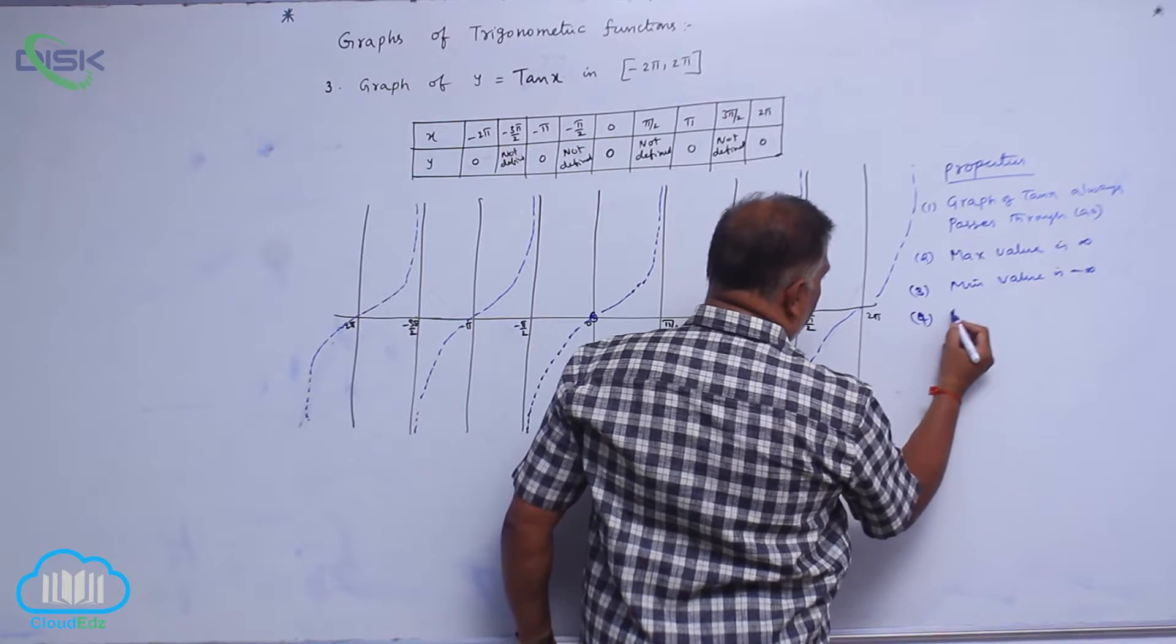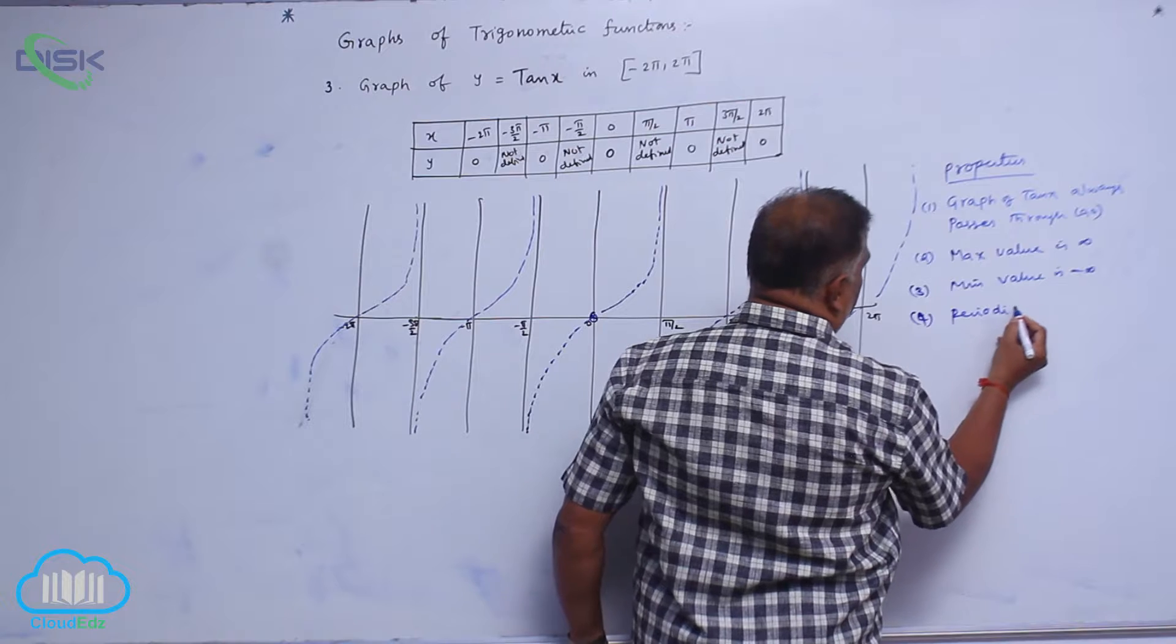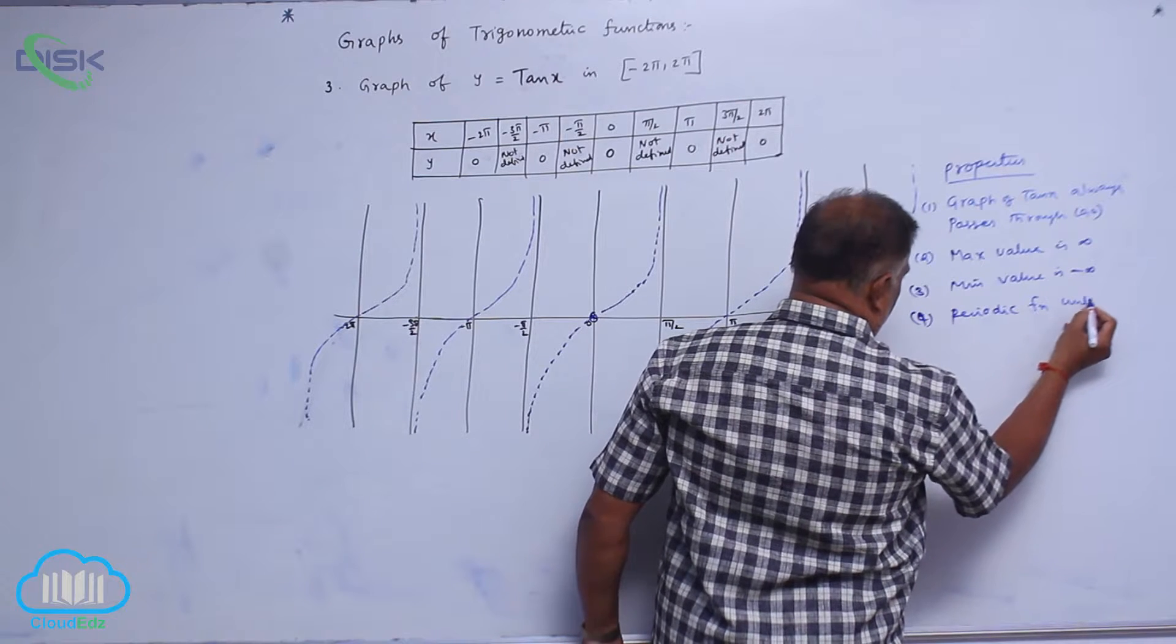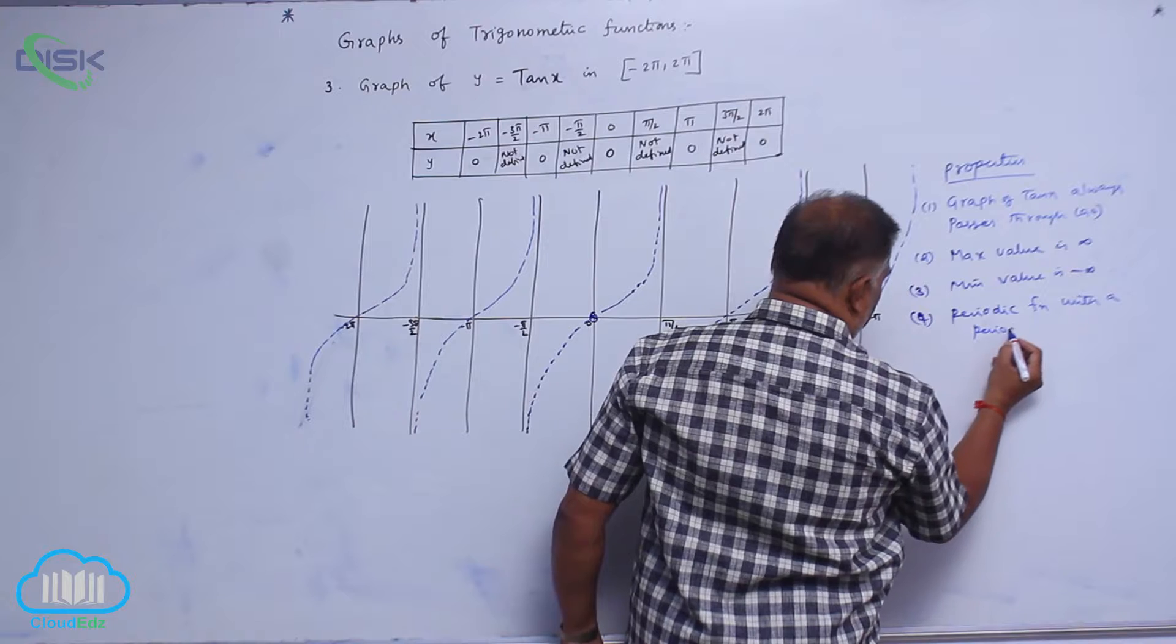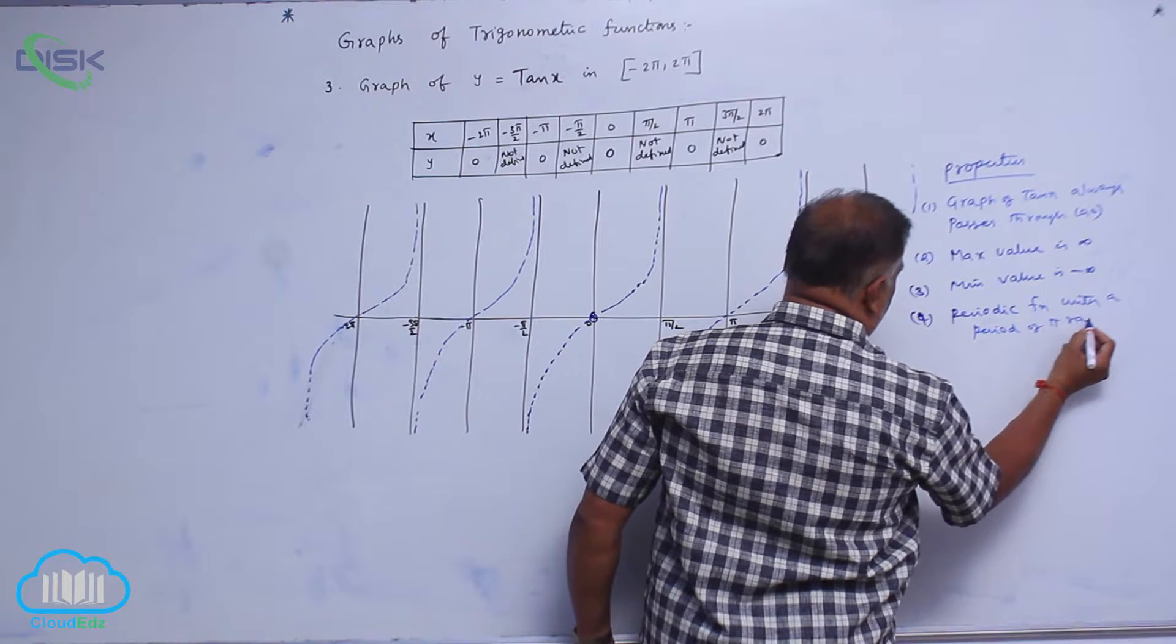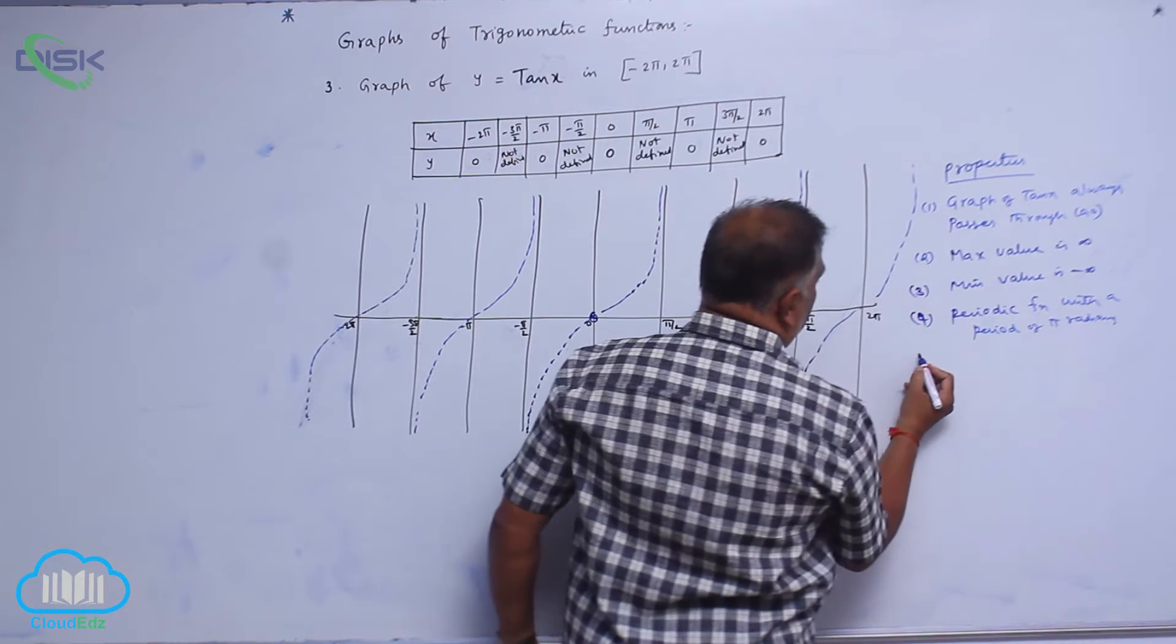Number 4: periodic function with a period of π radians. Next, fifth property,